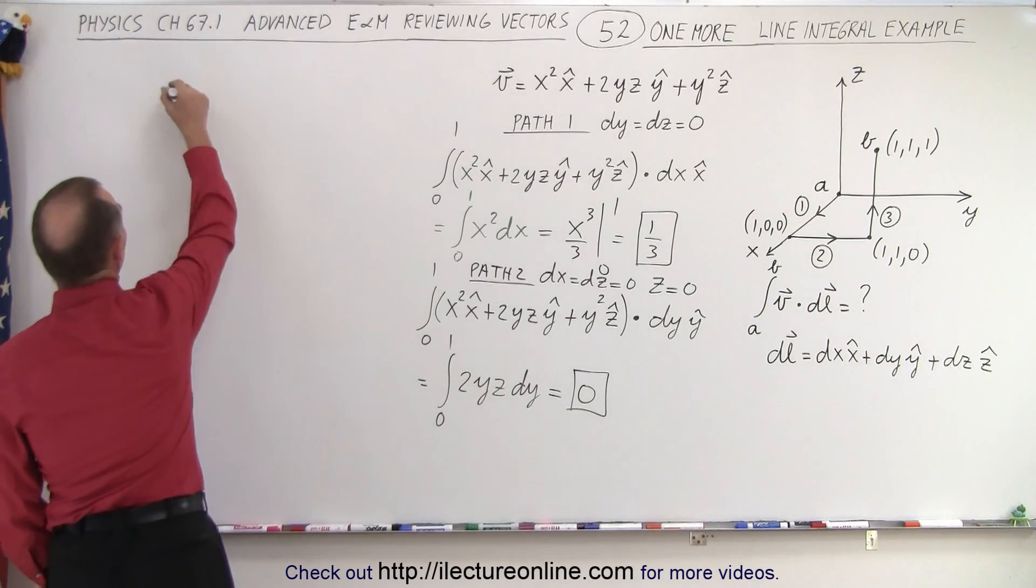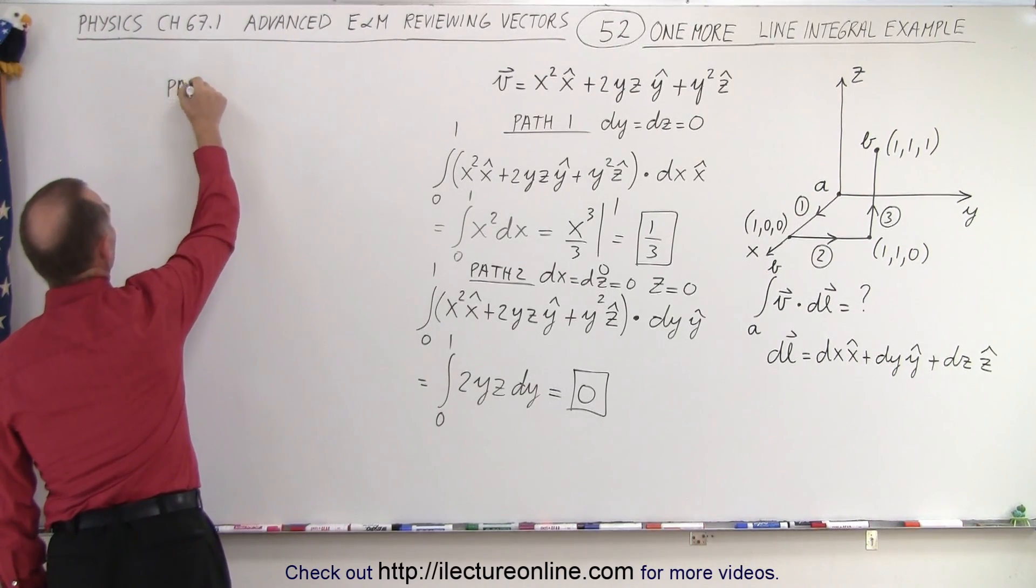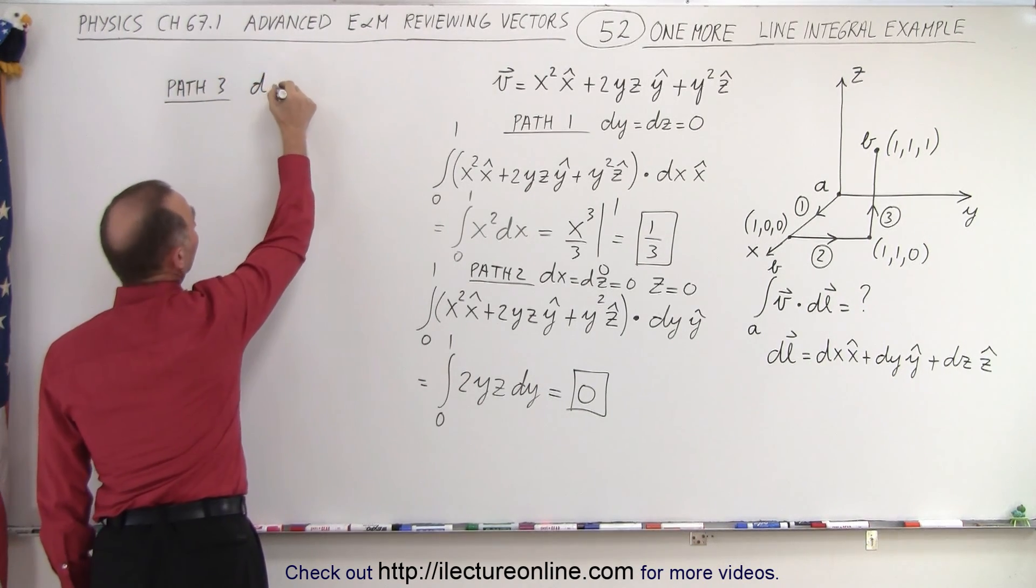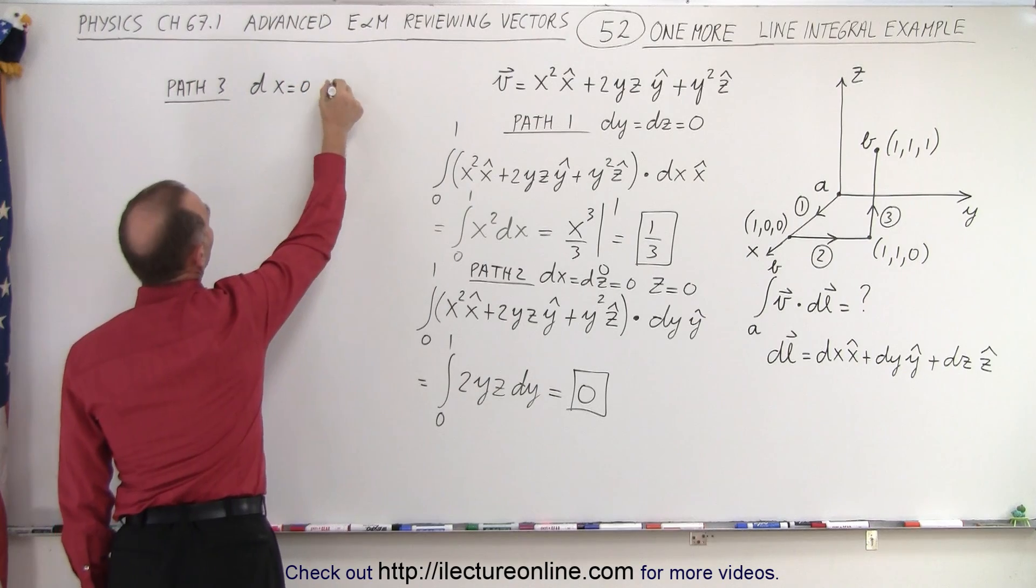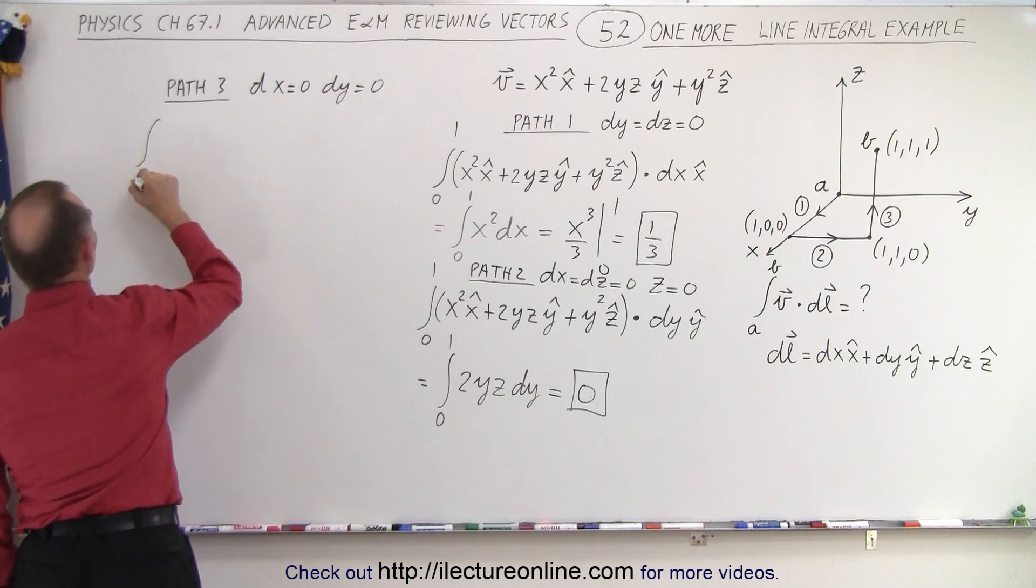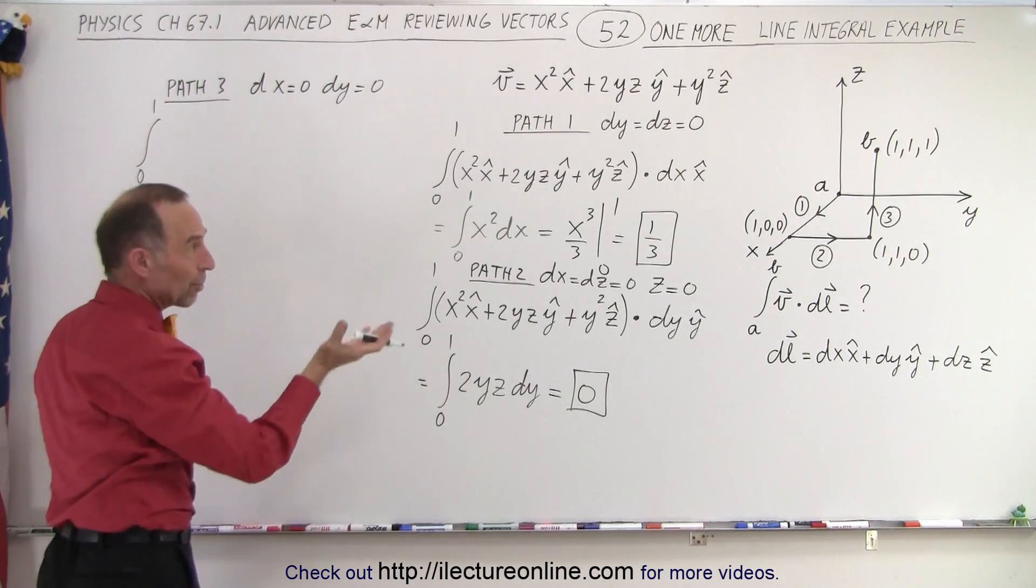So that's the second path. Now along the third path, path 3. Along path 3 we know that dx is going to be equal to 0 and dy is going to be equal to 0. So let's do our integral from 0 to 1, now it's in the z-direction.